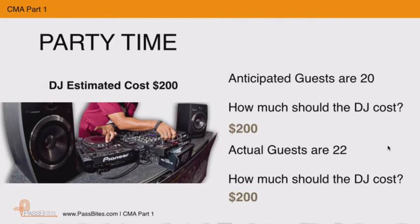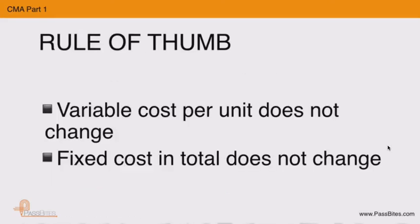So when preparing a flexible budget, the rule of thumb is: the variable cost per unit does not change — it changes in total. Fixed cost in total does not change, which means per unit it will be different. We find the variable cost per unit from the budget and multiply it by the actual output to get the flexible figure, but fixed cost will not change.